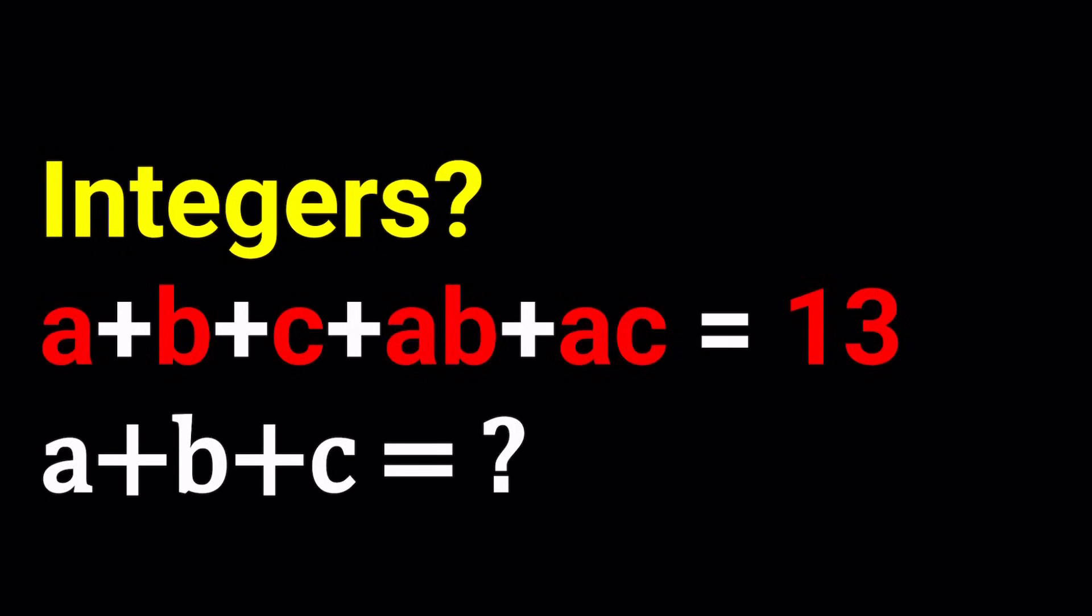Hello everyone. In this video, we're going to be solving a Diophantine equation with three variables. How crazy is that? We have A, B, C that are all integers, and we're given an equation, only one equation: A plus B plus C plus AB plus AC equals 13, and we're supposed to find A plus B plus C.